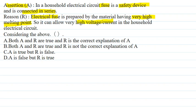Here we have assertion. Assertion says that electrical fuse is a safety device and is connected in series. The reason says that the fuse material has very high melting point and here we have high current or voltage. And here we have to select which of these four options is correct.